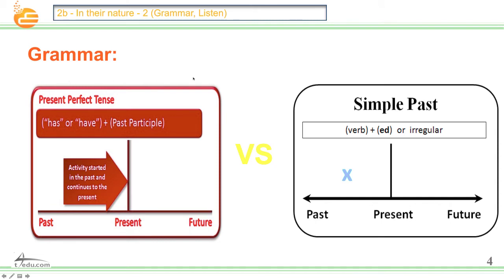Present perfect tense. You have the structure: have or has, plus past participle. Don't forget we have the base form, the past form, and the past participle. So the present perfect tense describes activities that started in the past and continue to the present. About the past simple: verb plus -ed, or irregular, like 'go' became 'went.' In the past simple, it stayed in the past.